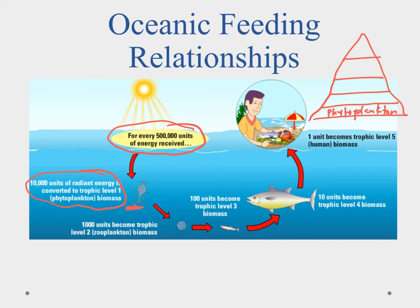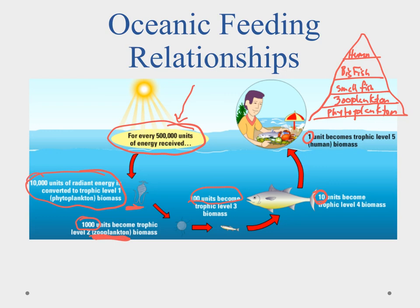Phytoplankton is then fed on by zooplankton, and only about 10% transfers — so about 1,000 units move to trophic level two, which is made up of zooplankton. From there, 100 units transfer up to level three — small fish. That takes us to level four, where only 10 units transfer to our big fish. And finally we reach the apex: humans. So from half a million units of solar energy, only 10,000 gets converted by phytoplankton, and every step loses 90% to living and reproduction. Only 10% moves on, meaning we as humans get about one unit of energy.